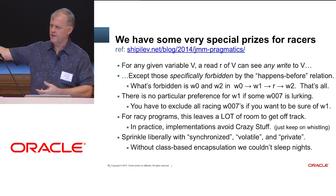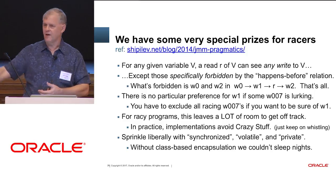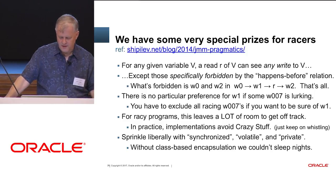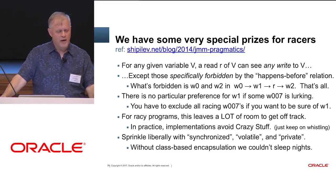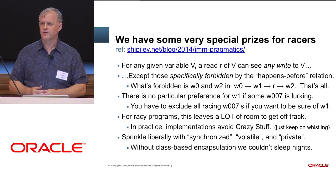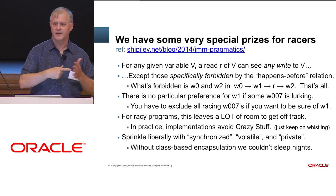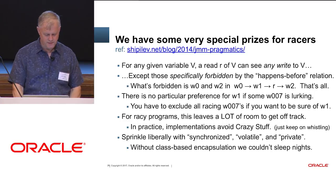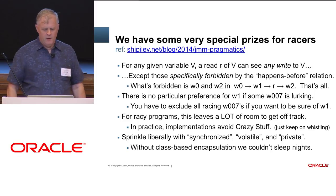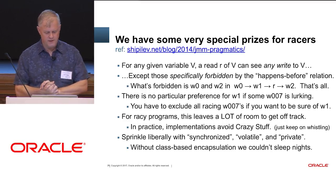If you have some racing 007 variable out there writing to your variable, like an attacker — and I've fixed security bugs like this — you have an attacker who takes a perfectly well-structured program, manages to get a reference to a variable, and smashes something racially in a concurrent thread. You can break the system. You can rootkit the system. So in practice we avoid crazy stuff, but we don't avoid it well enough to avoid bugs and security escalations.